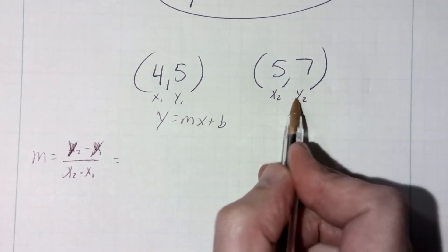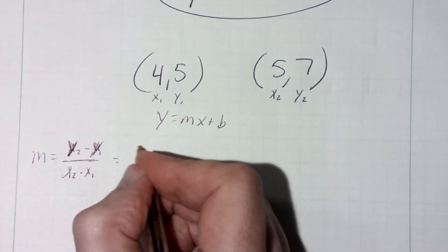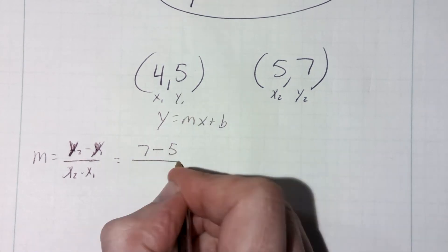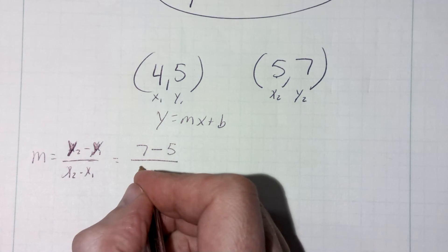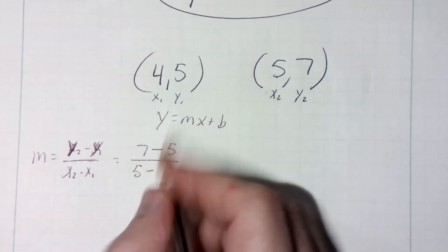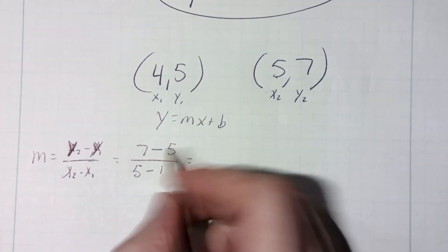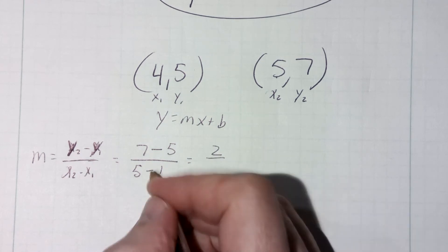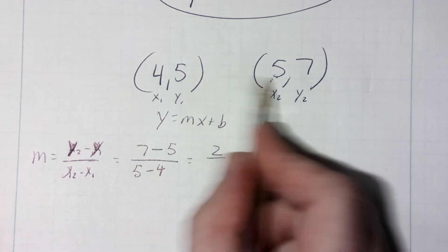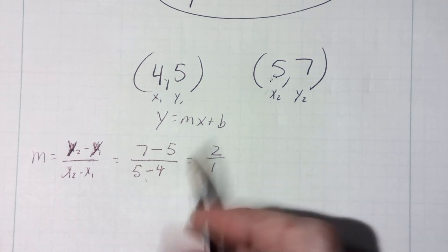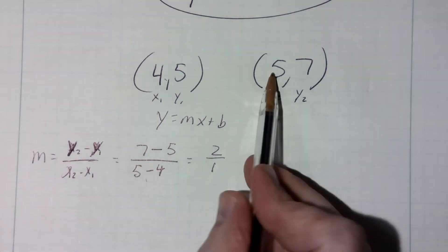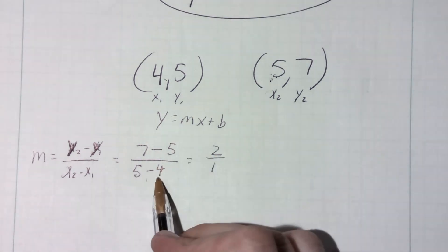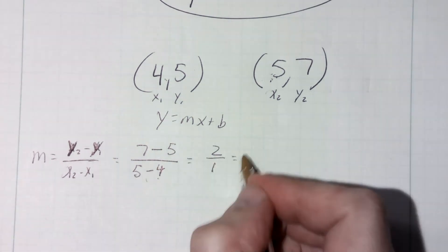So I'm going to take my second y value, which is seven, minus off my first y value, which is five, divided by my second x value, which is five, minus my first x value, which is four. I get a slope of two over one — five minus four is one — which gives a slope of two.